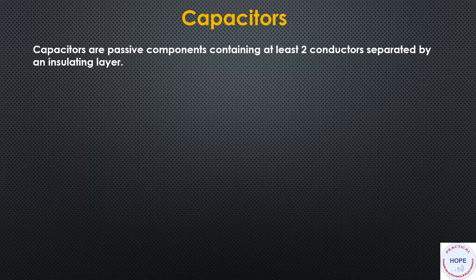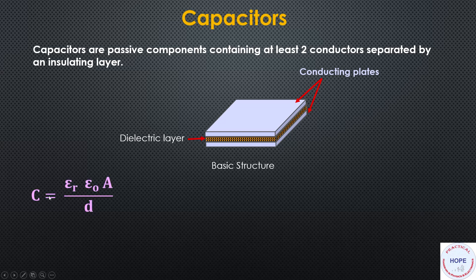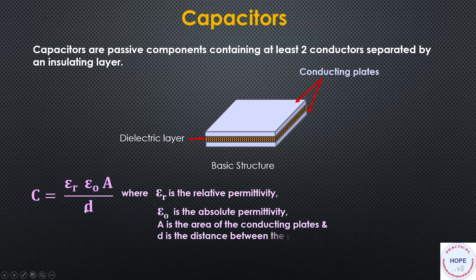Capacitors are passive components containing at least two conductors separated by an insulating or dielectric layer. The formula is: C = εr × ε₀ × A / d, where εr is the relative permittivity, ε₀ is the absolute permittivity, A is the area, and d is the distance between the two conducting plates.